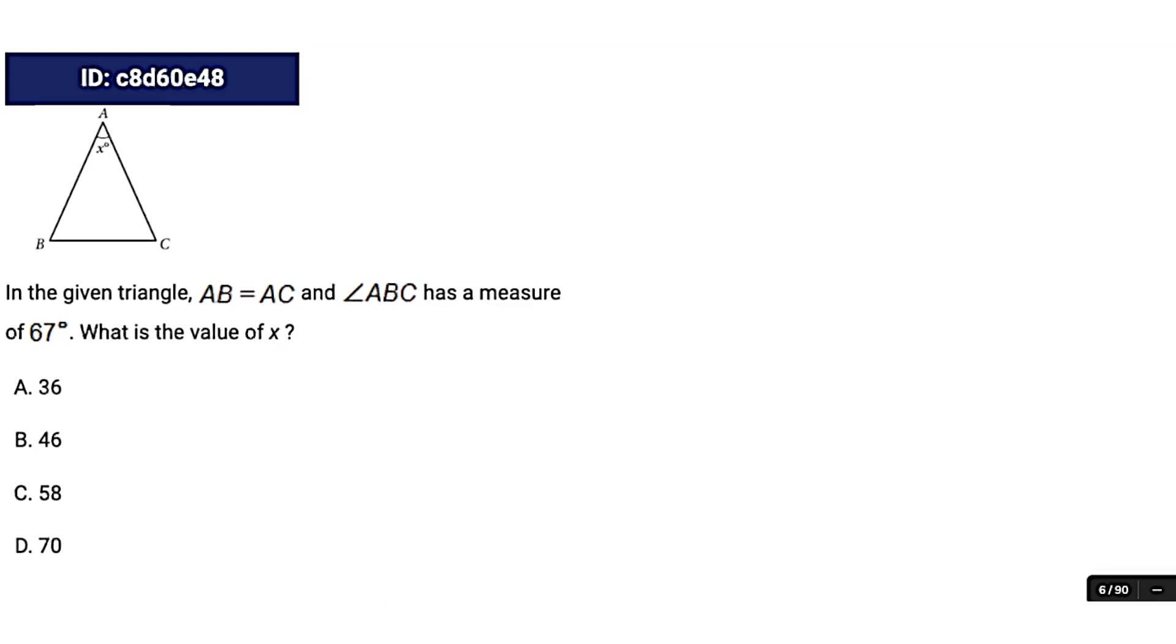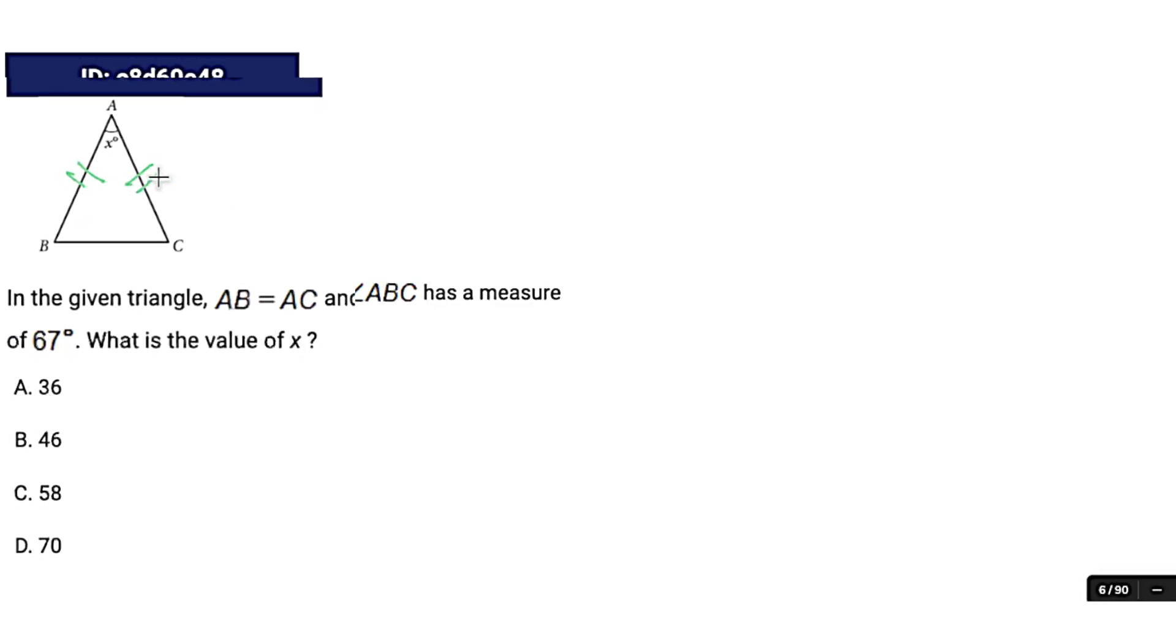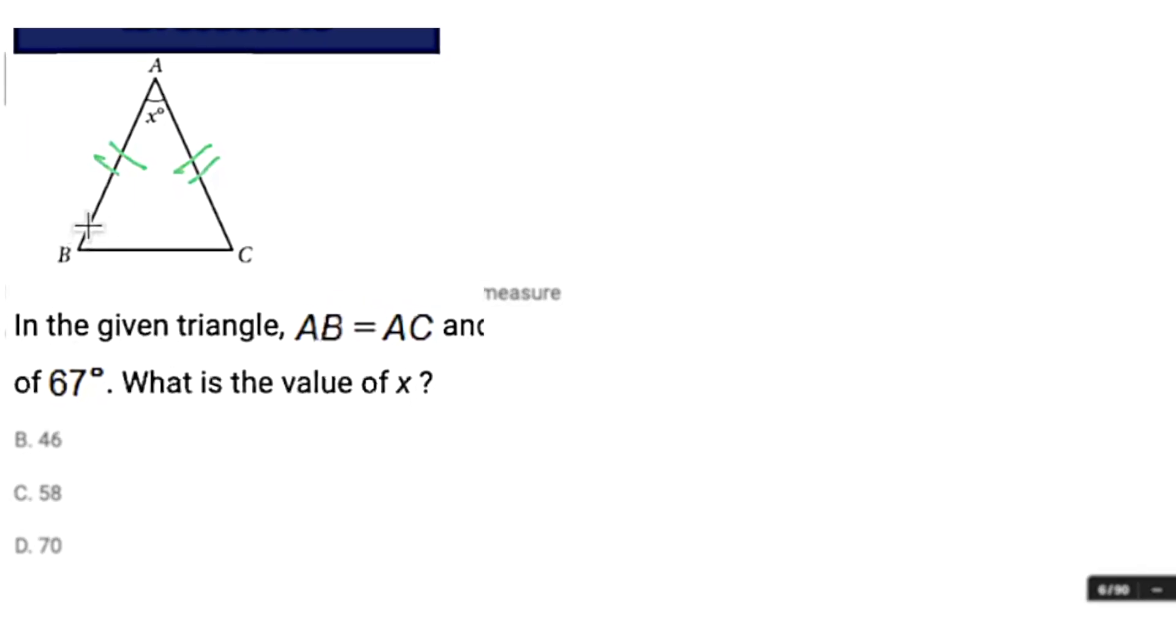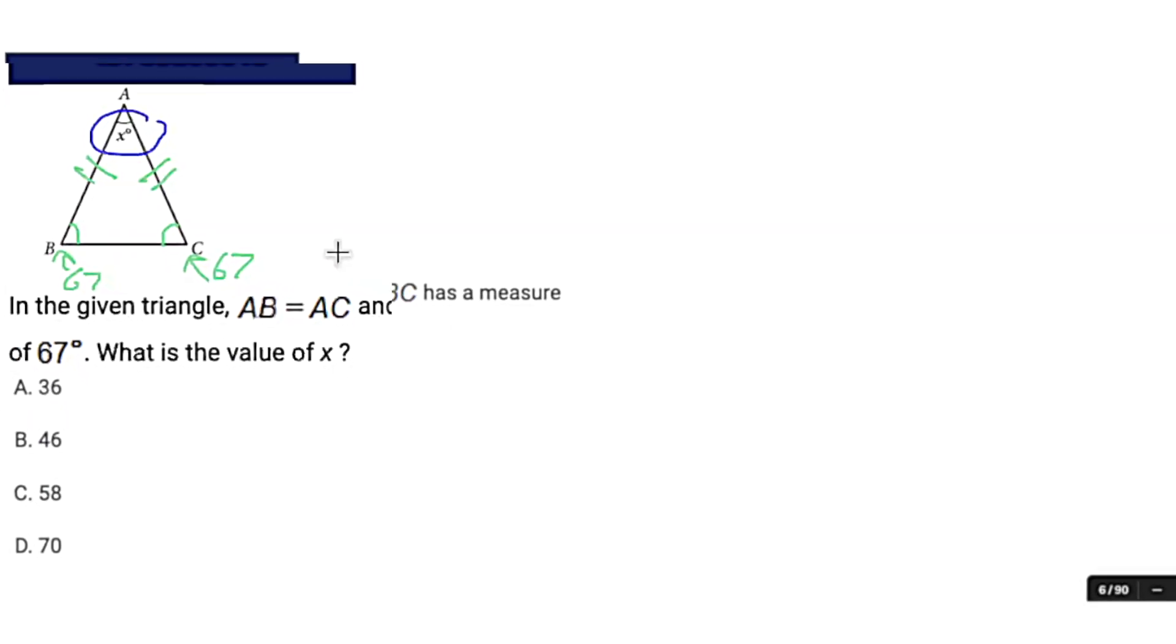We'll start with some easy stuff. First question, they're giving us some information saying that AB equals AC on this triangle. Right off the bat, we should identify that as isosceles. If you have two equal sides, it means you also have two equal angles at the bottom. It tells us that ABC, which is this angle here, is 67 degrees, which means angle C has to be 67 degrees. It wants to know the value of X, which is our leftover angle. We know there's 180 degrees in a triangle, then we just have to subtract 67 times 2, which is 134, which leaves us with 46. And indeed, there's an answer right there.